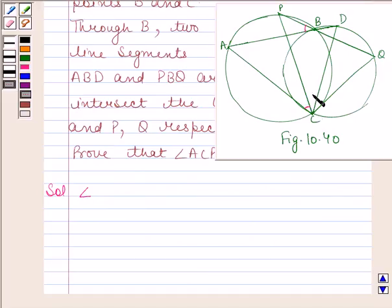Angle ACP is equal to angle ABP because these are angles in the same segment. And angles in the same segment are equal.